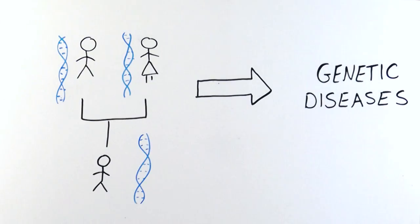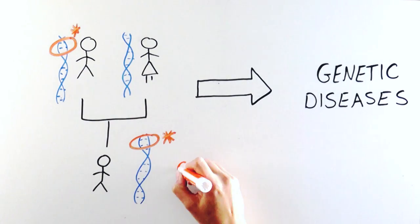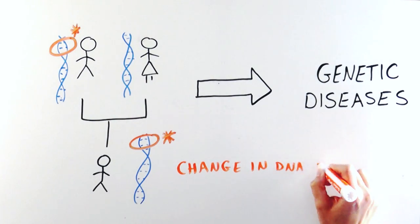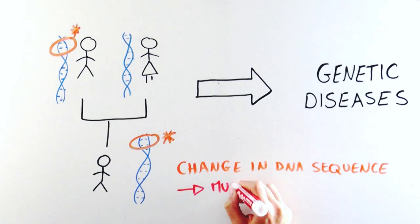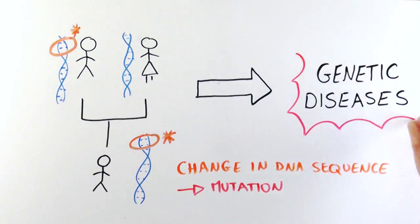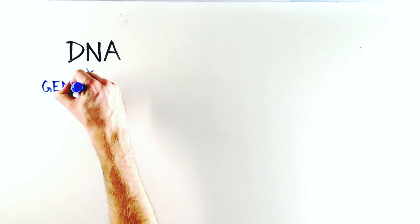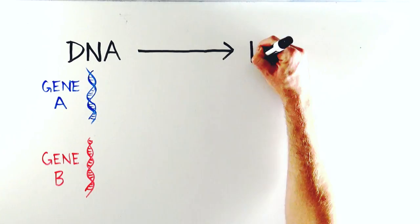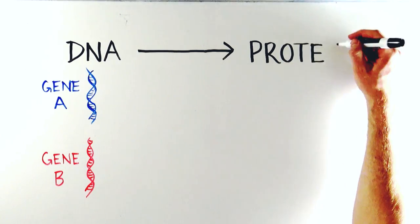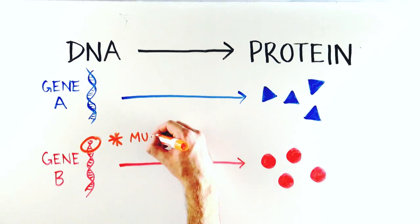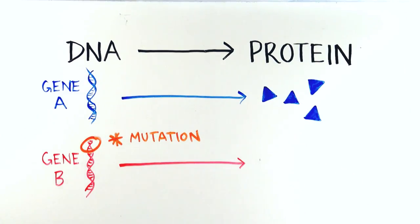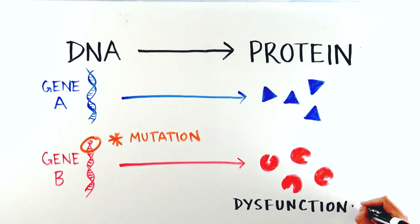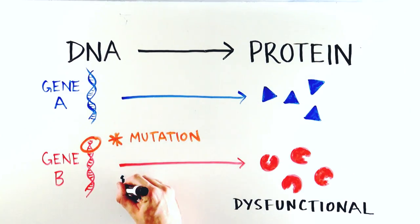Genetic diseases are due to inherited changes in our DNA sequence, which we call mutations. Our DNA is organized in genes that produce specific proteins. Some mutations prevent the production of a functional protein, and this may cause disease.